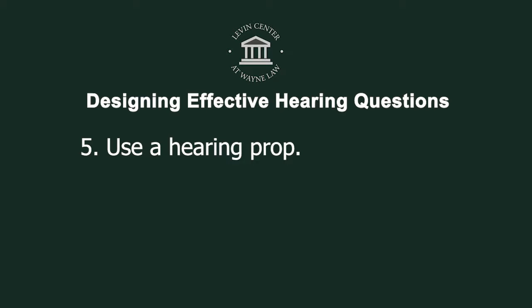Tip number five: try to use a hearing prop like a document, chart, photograph, or physical object. You can use materials provided by the committee or come up with something new. If you want to use something new, be sure to run it by the committee staff first to see if they have any objections or suggestions. You may also need to get an official hearing exhibit number to introduce it into the record and may have to make copies for committee members, staff, and witnesses. You may also have to ensure that your boss uses the correct exhibit number at the hearing. Using a hearing prop takes preparation but can make your boss's questions more vivid and powerful.